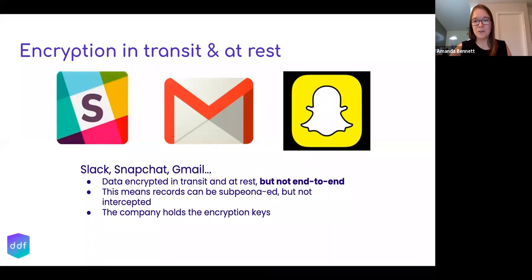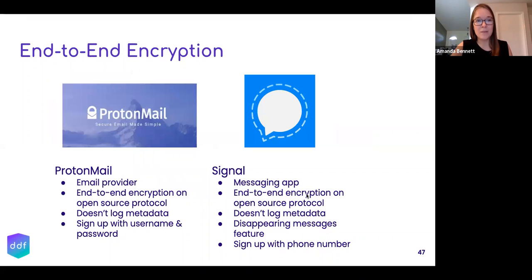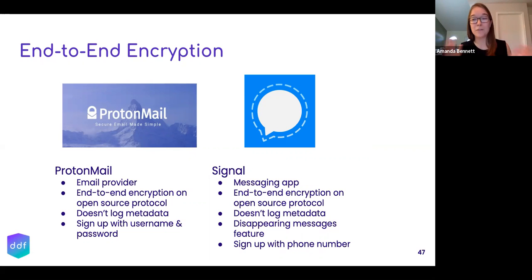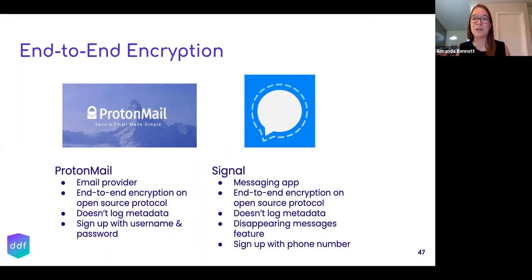End-to-end encryption is the zero-knowledge idea — the provider has you establish keys when you set up your account, and then they can't access any of your information. With ProtonMail, you sign up with a username and password, and the password is your encryption key. So if you forget your ProtonMail password, there's nothing you can do — you can't access your information. It's scrambled, but you're protected because ProtonMail doesn't store a copy of your password. It's your key, and only you have it.